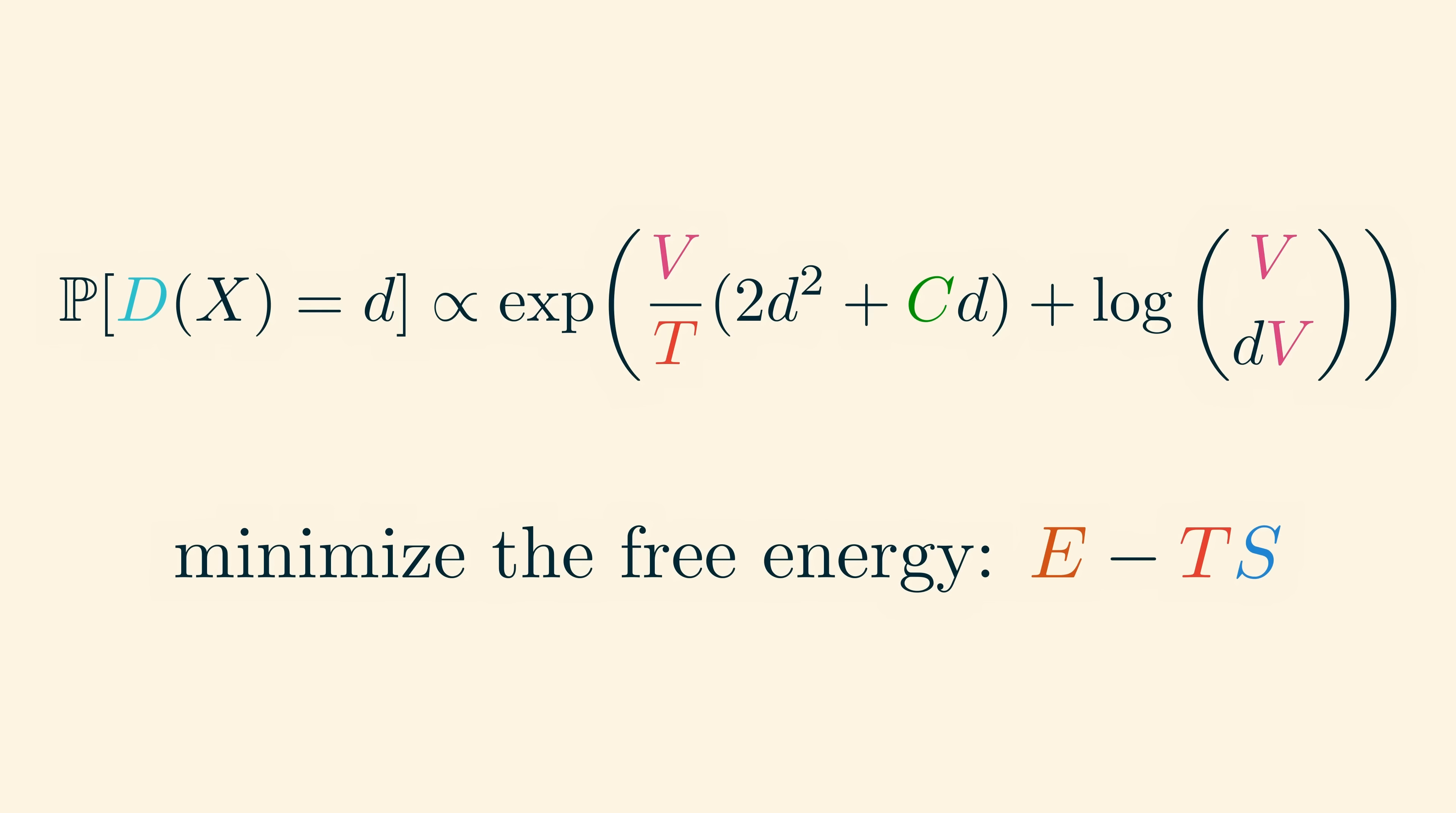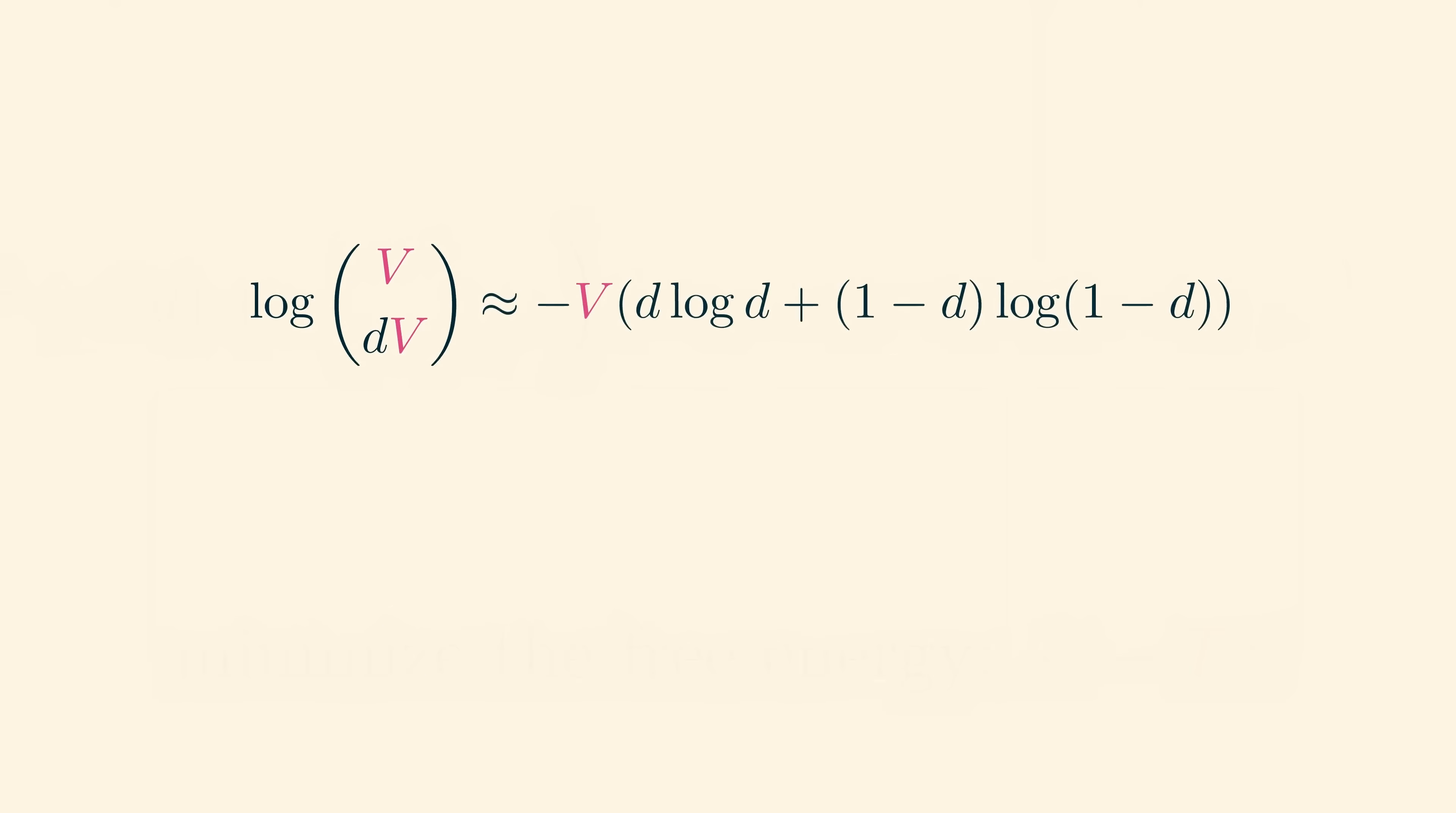We're going to approximate this by a simpler function of d, namely minus v times d log d plus 1 minus d log 1 minus d. This is sometimes called Stirling's approximation, and I think it's worth it to see how this kind of approximation can be proved, so let's quickly do that right now.